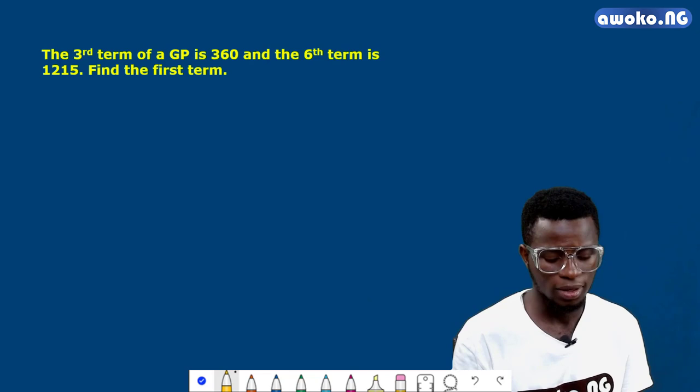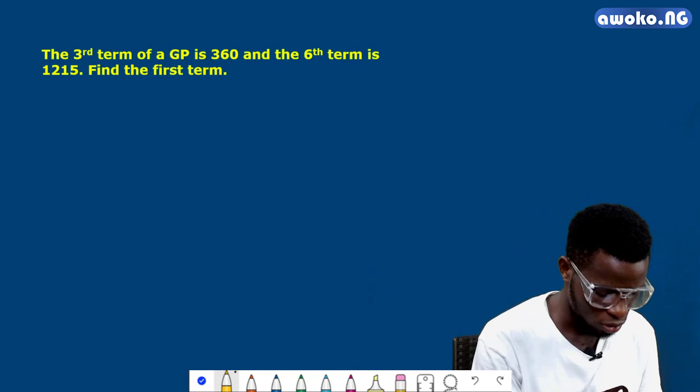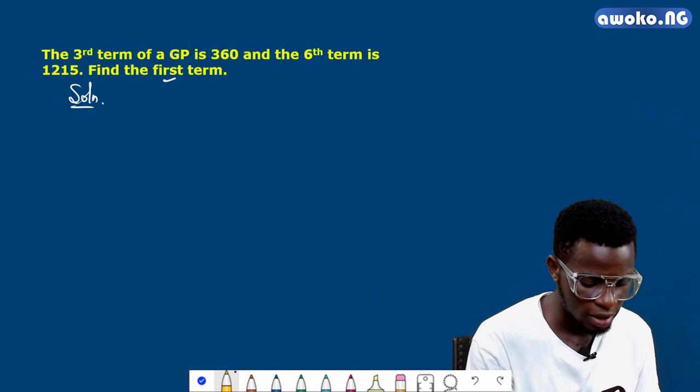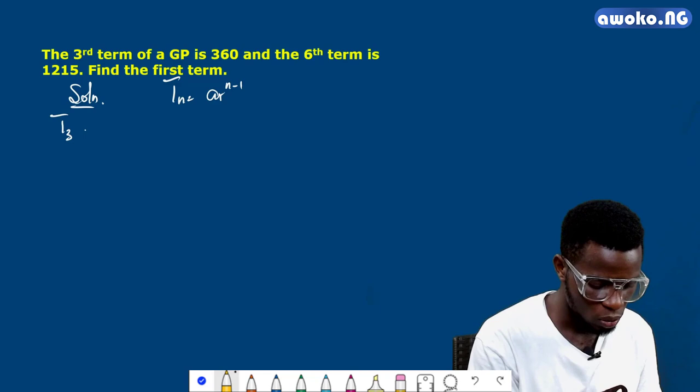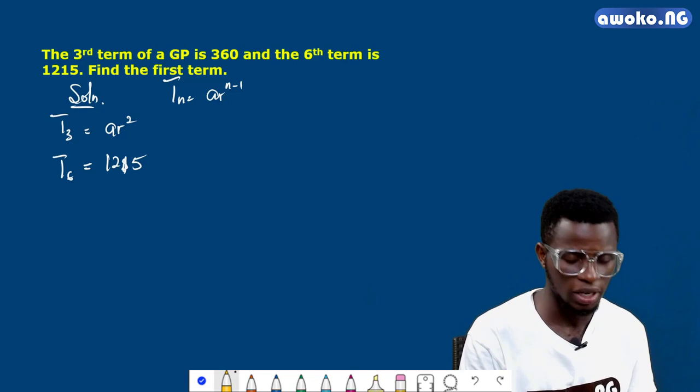And the sixth term is 1215. Find the first term. To solve for these, remember that T_n equals ar^(n-1). Therefore, T_3 will be equal to ar² and T_6 will be equal to ar⁵.